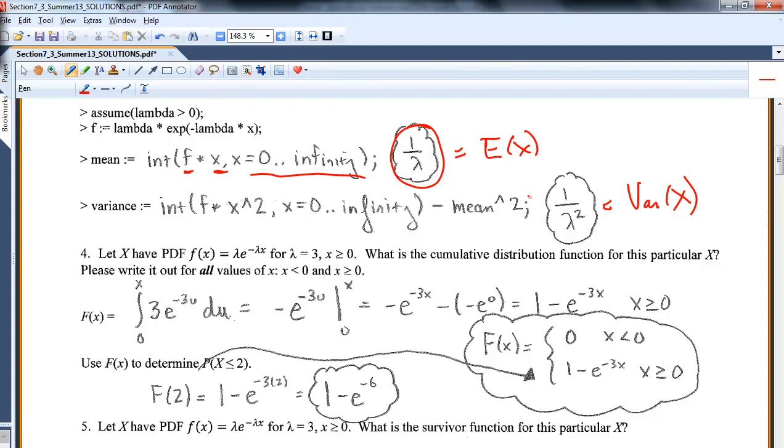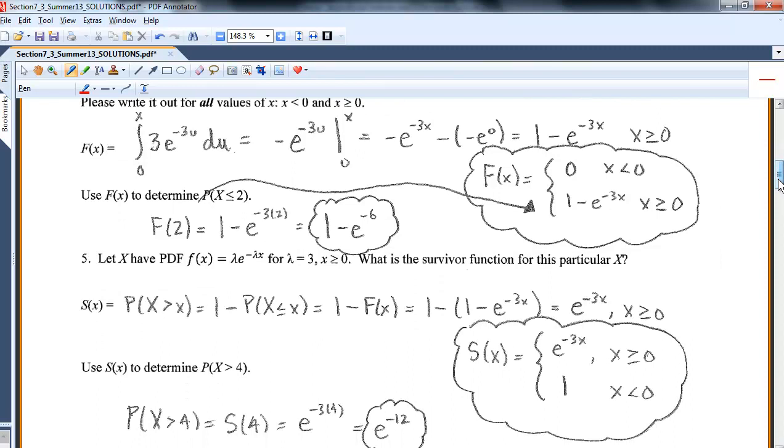Down here, I'm showing you it has a very nice cumulative distribution function. In general, if f of x is lambda e to the negative lambda x, its CDF will always be 1 minus e to the negative lambda x. So instead of integrating, if I asked you what's the probability the random value takes on a value less than 3, you can always integrate from 0 to 3 f of x dx, or you could just stick 3 in for x into your cumulative distribution function. Very nice closed form capital F.